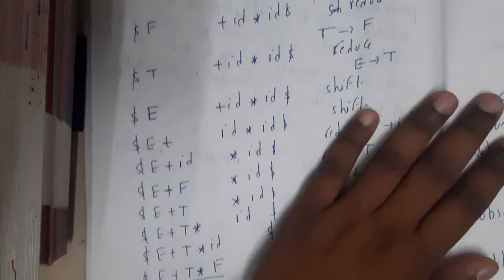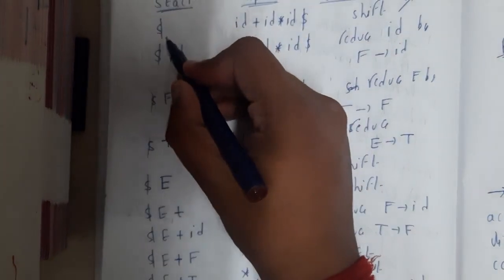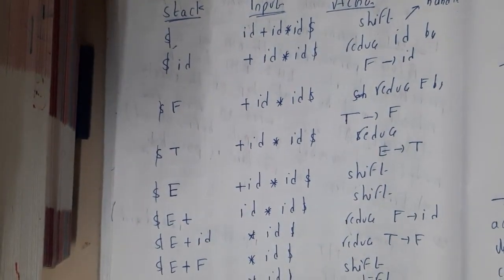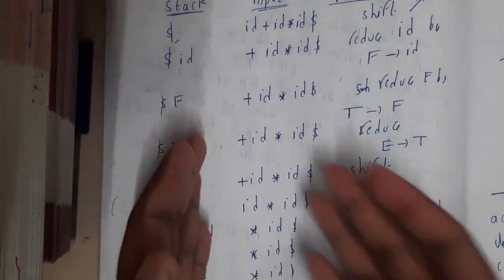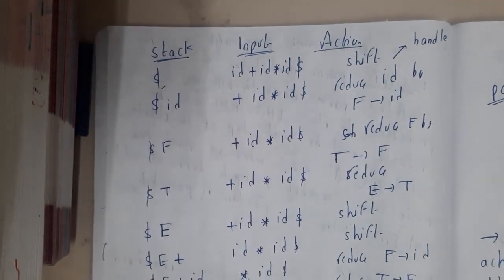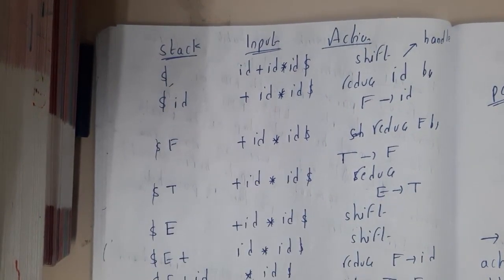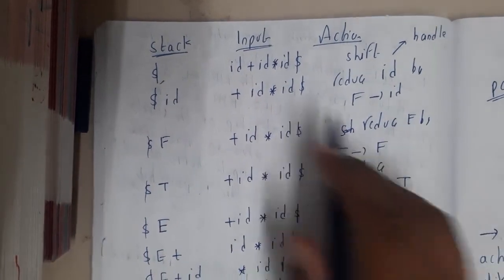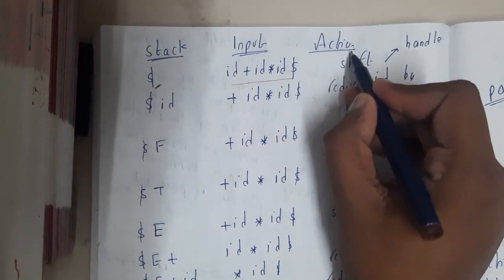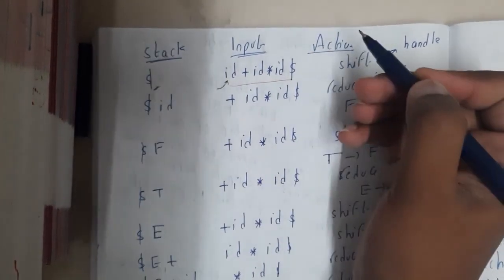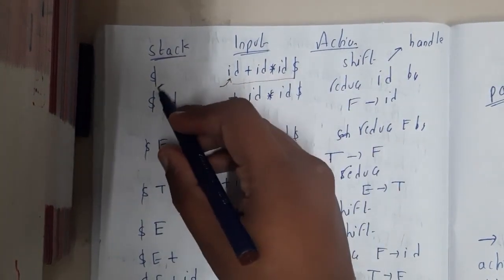Let us start. Please concentrate for around five to ten minutes and you'll have a crystal clear idea on this topic. Once you understand how to fill the stack, input, and action columns, you'll be clear on the whole concept. Initially, the stack has only dollar and the input string contains the full string. We are initially pointing to id.